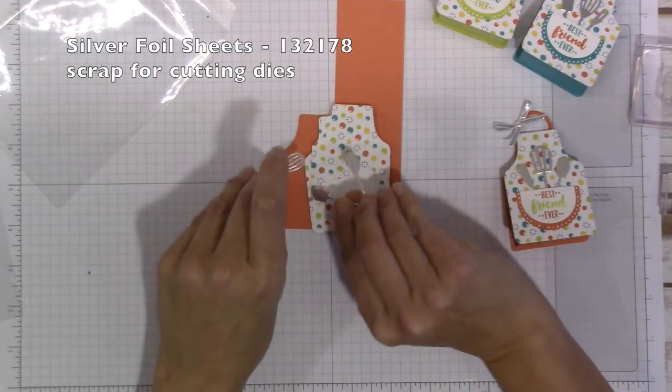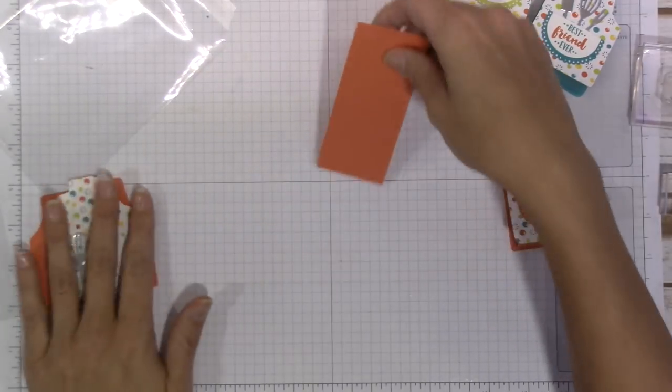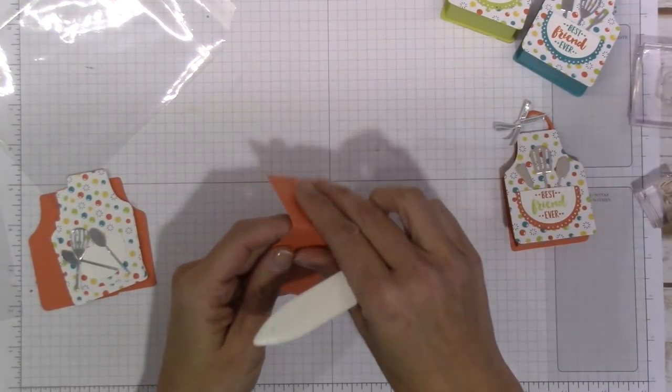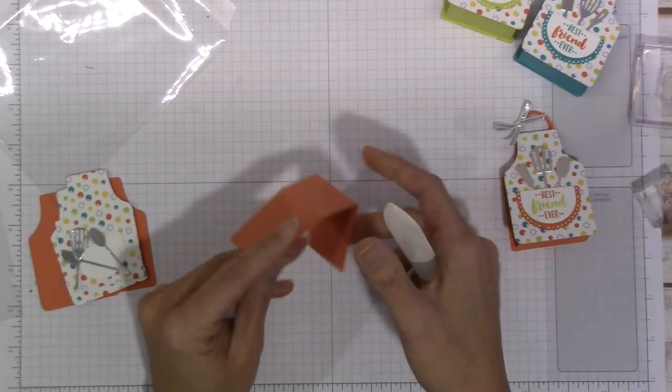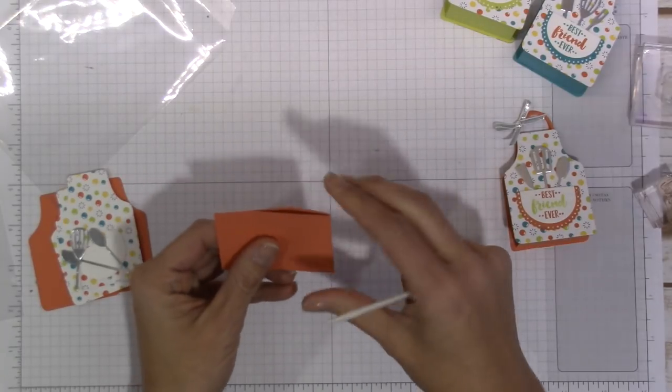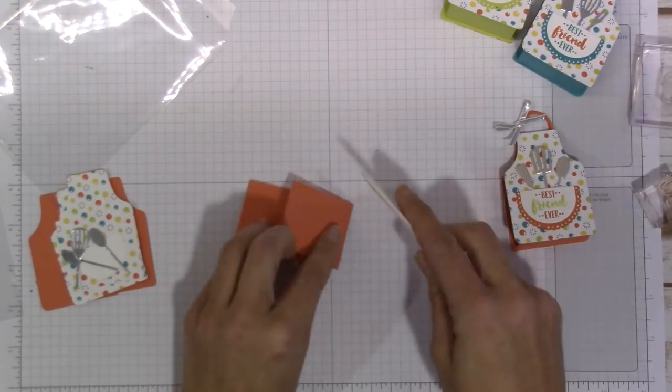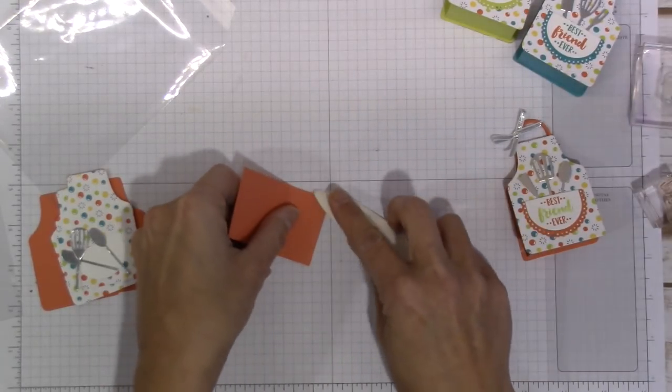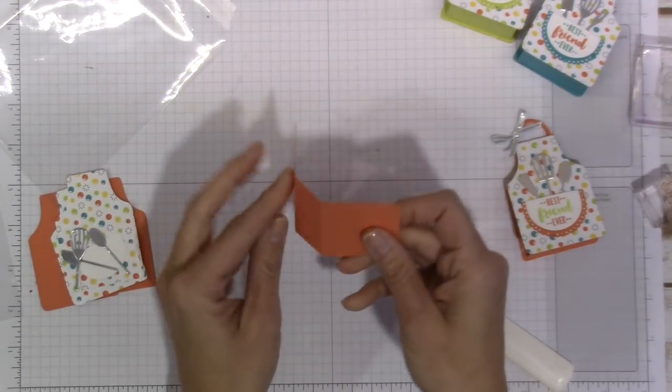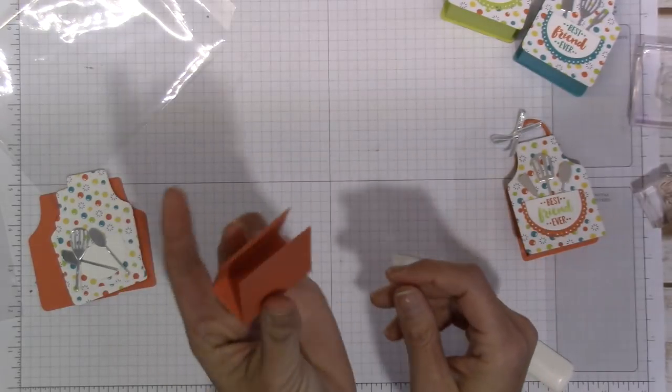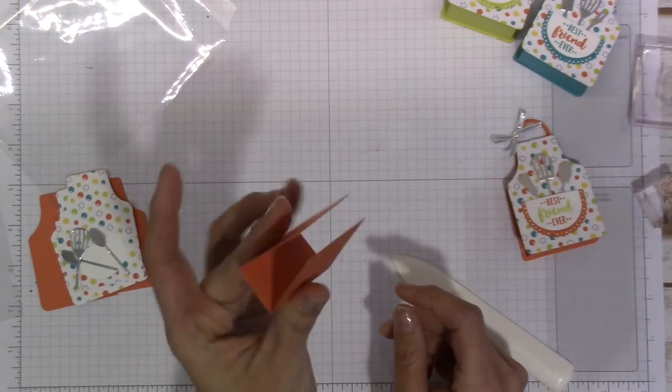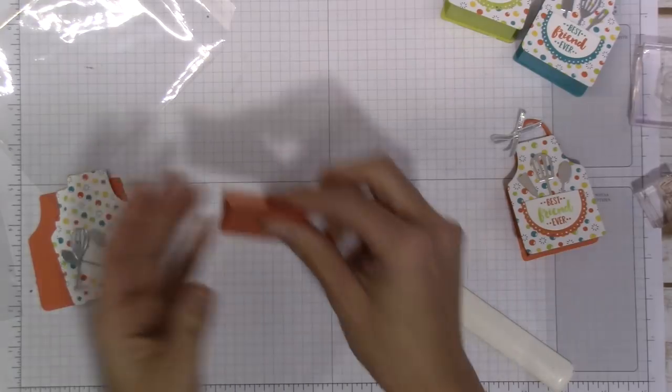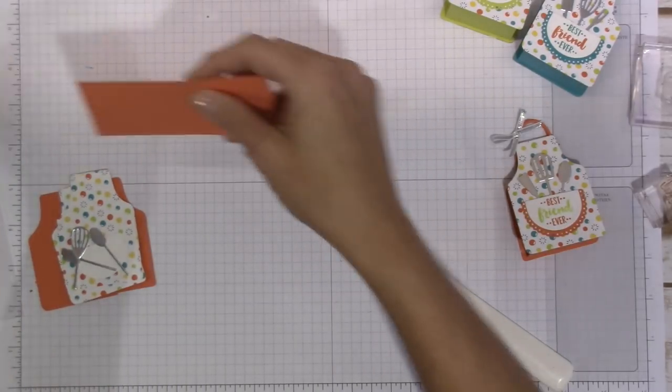So that's it, that is our supply list. So I went ahead and I pre-scored your Calypso Coral cardstock. It's going to get scored at one and three-quarters and then again at two and three-quarters. And that just gives our little chocolate piece a little holder to attach to. So we're going to set that aside for a minute.